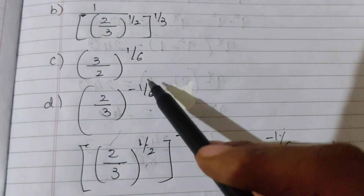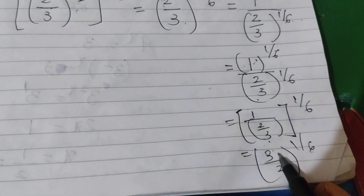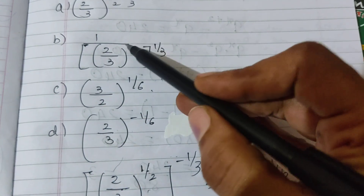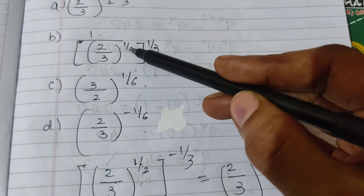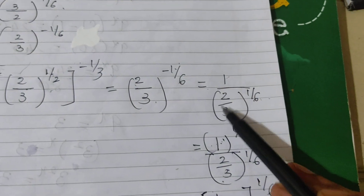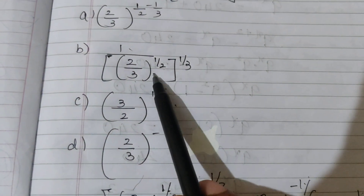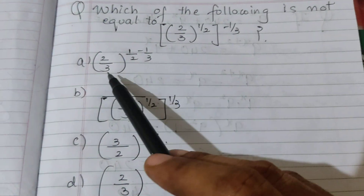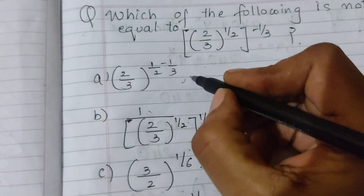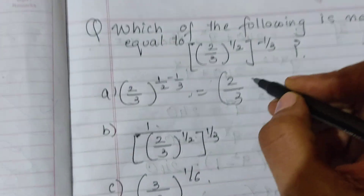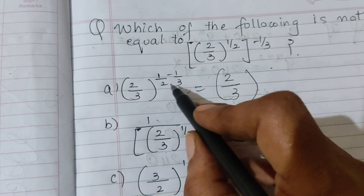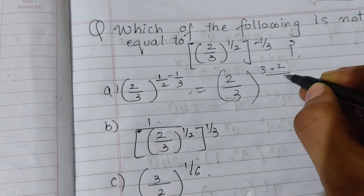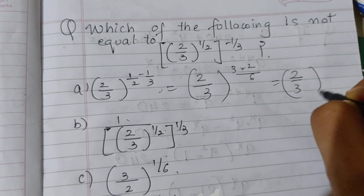So we have shown that (3/2)^(1/6) is also equal to the original expression — that's option D. And option B, which is 1/(2/3)^(1/6), is also equal. Now let's check option A: (2/3)^(1/2 - 1/3). Taking LCM as 6, we get 3 minus 2 over 6, which is (2/3)^(1/6).